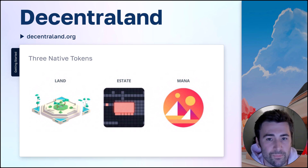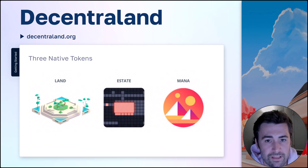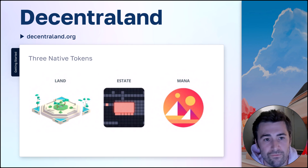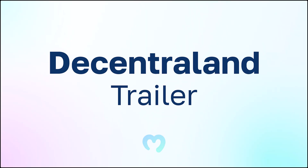The estate token is very similar to the land token, but it allows you to build larger structures, so you have a little bit more freedom in terms of what you're building with your experience. Probably the most popular part of the game is the mana token — that's really the in-game currency, and it's also the governance token, so it gives you voting rights to help steer the roadmap, vote on new features, and other community decisions. Next, let's take a look at the Decentraland trailer.